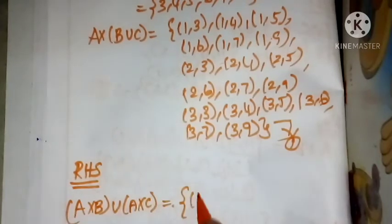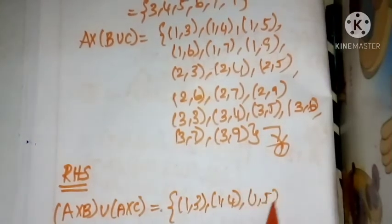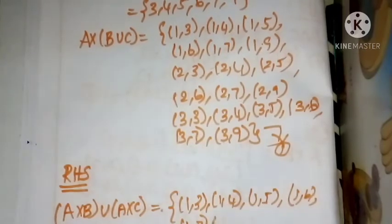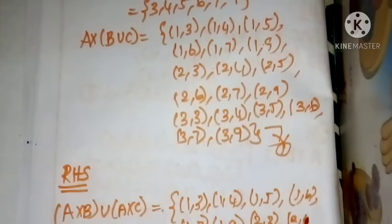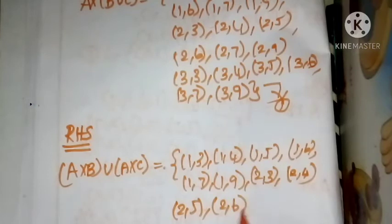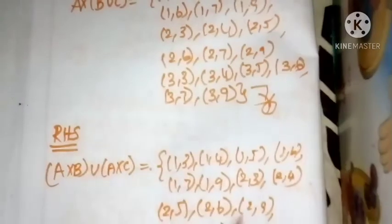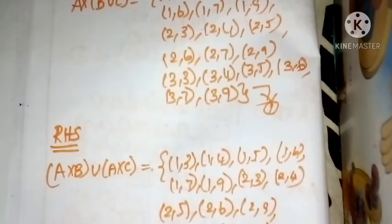(1,3), (1,4), (1,5), (1,6), (1,7), (1,9), (2,3), (2,4), (2,5), (2,6), (2,9), (3,3), (3,4), (3,5), (3,6), (3,7), (3,9). A cross C, this is the second subdivision.